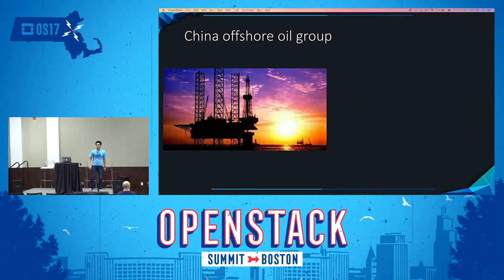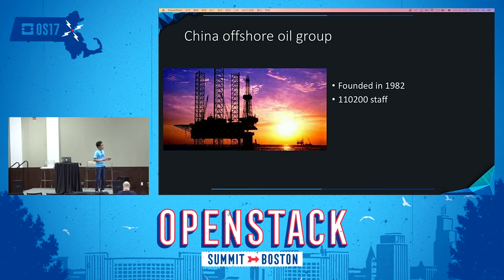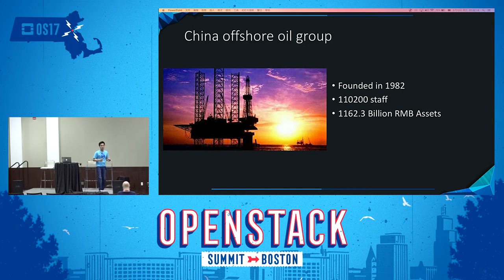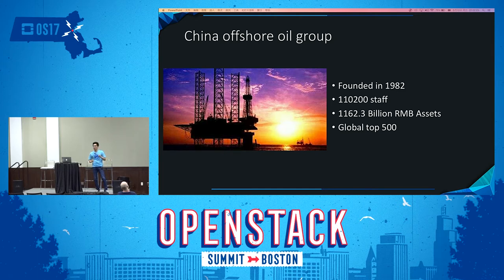China Offshore Oil Group is one of the three largest oil groups in China. It was founded in 1982, and over the past 30 years it has advanced its global business across Asia, Europe, Australia, and Africa. It has over 10,000 staff and total assets of 1,962 billion RMB. They are ranked in the global top 500 — in 2016 they ranked 109.